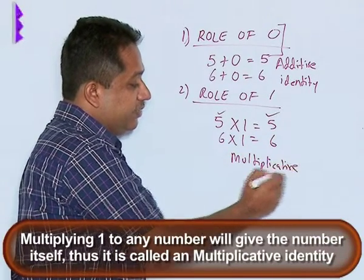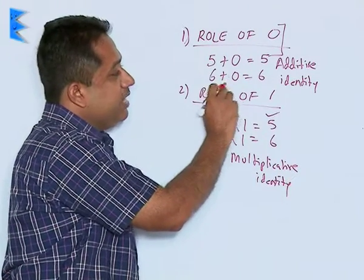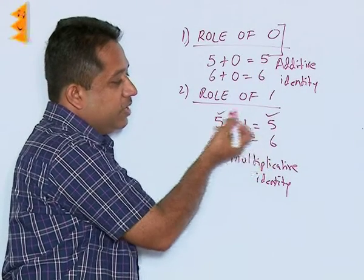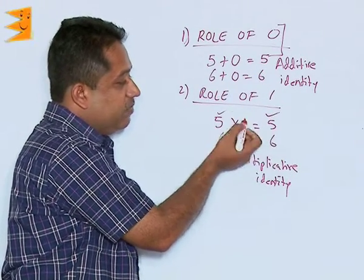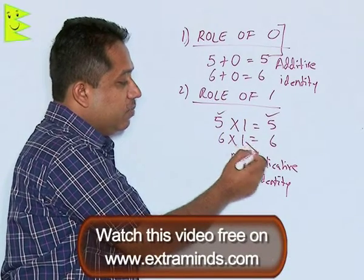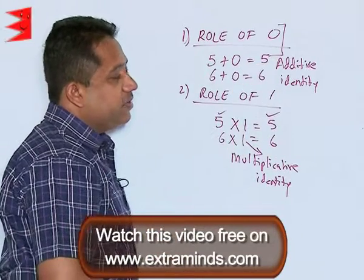This is the difference in the property of 0 and 1. When we multiply any 0 with a number, then we are getting 0, so the number is not obtained. But when we multiply a number with 1, we get the number. So, 1 is called a multiplicative identity, whereas 0 is called additive identity.